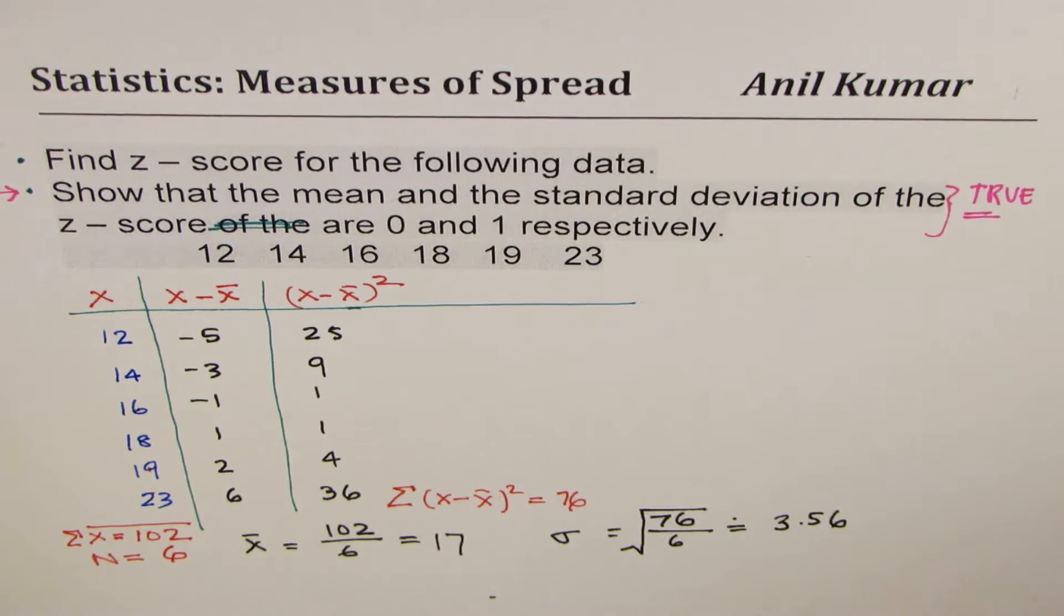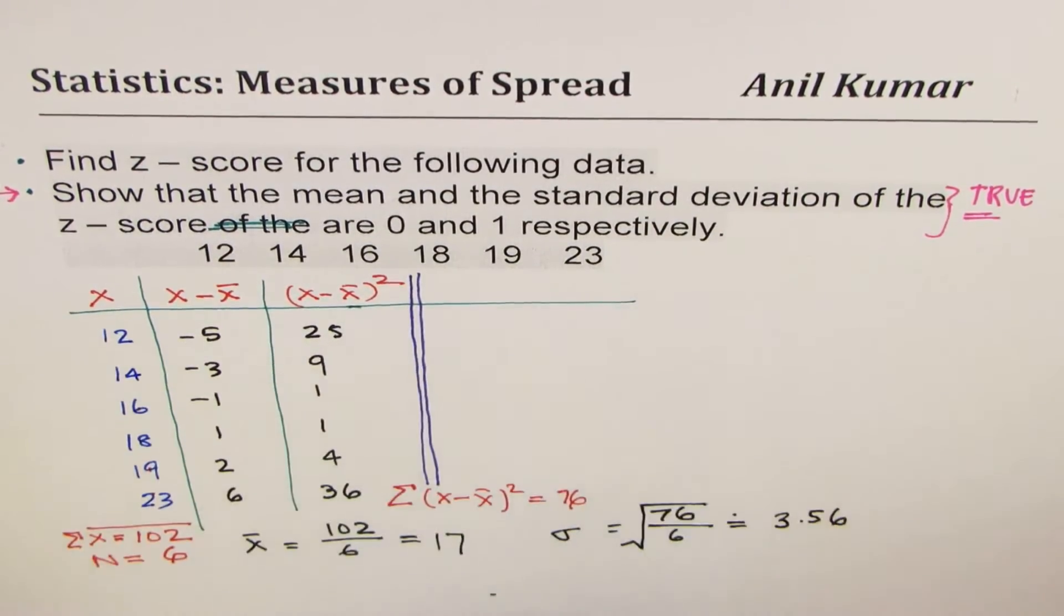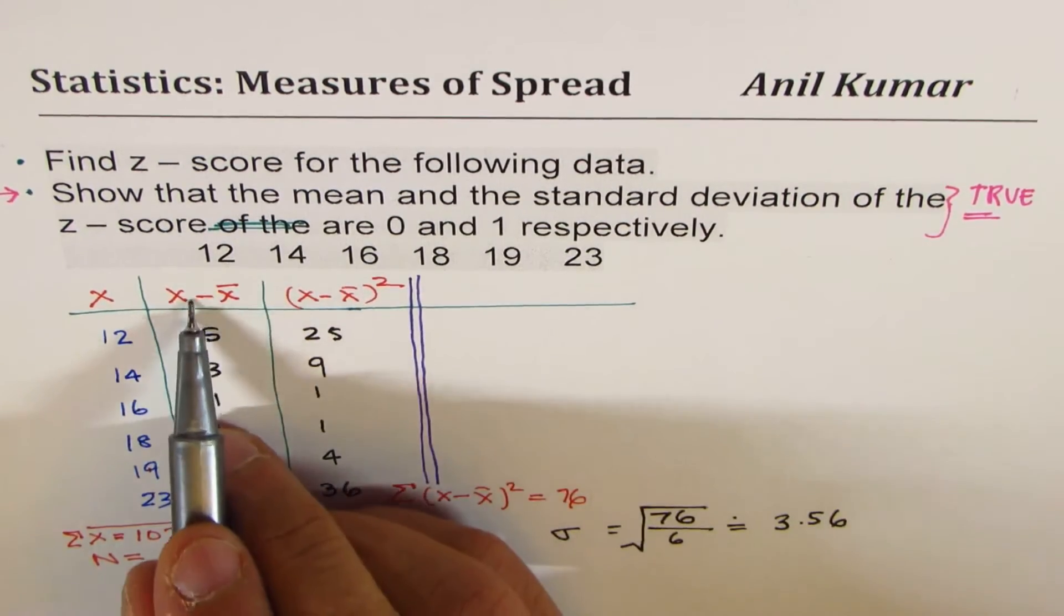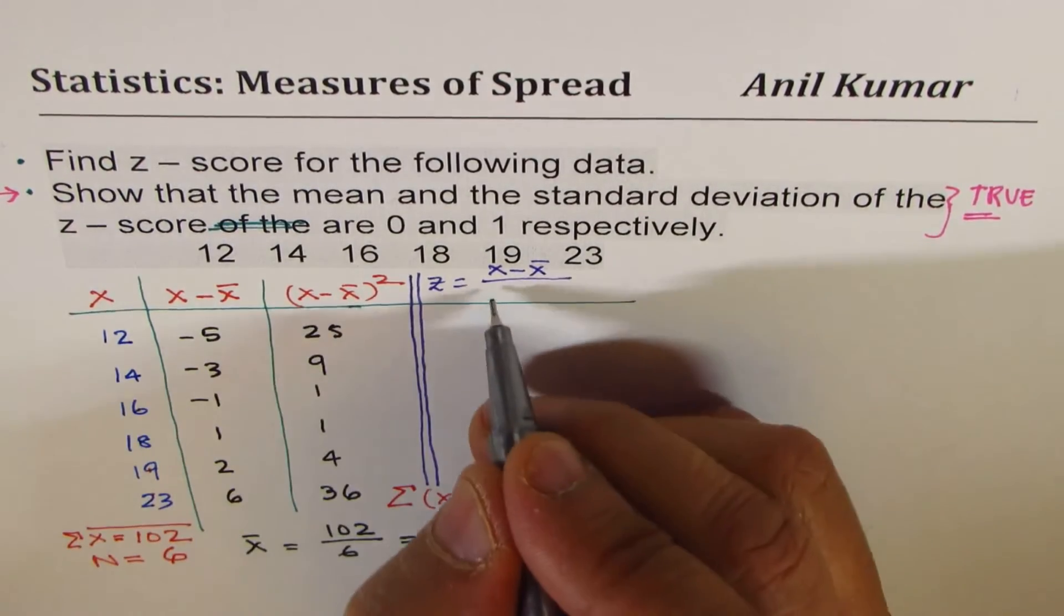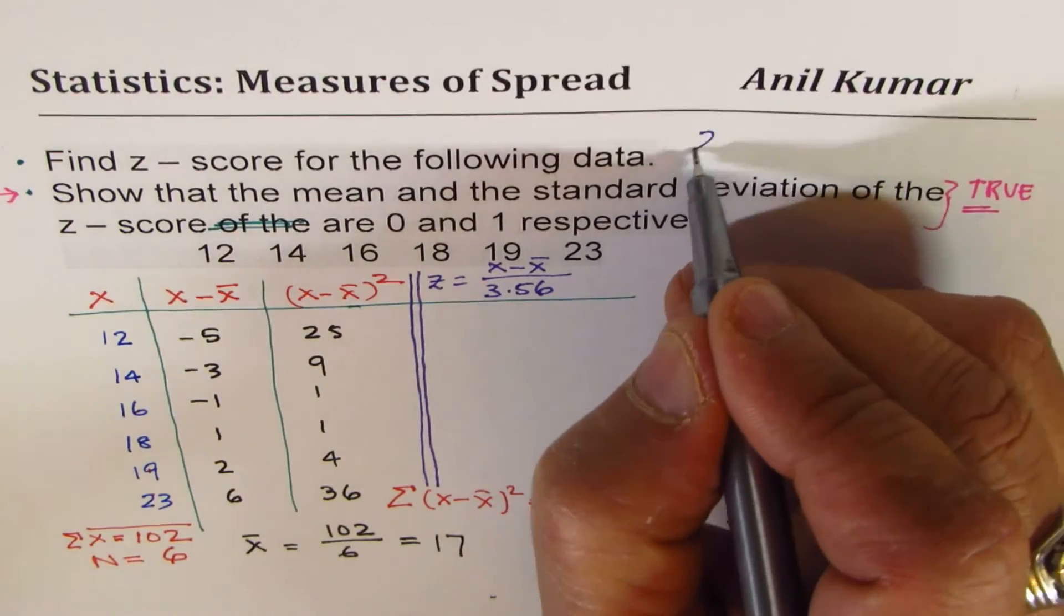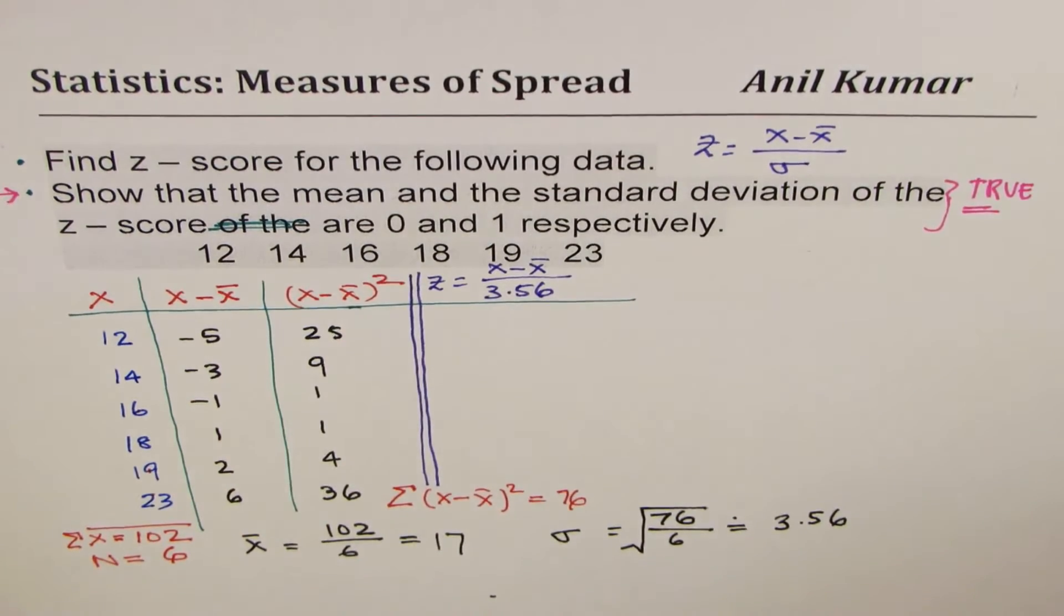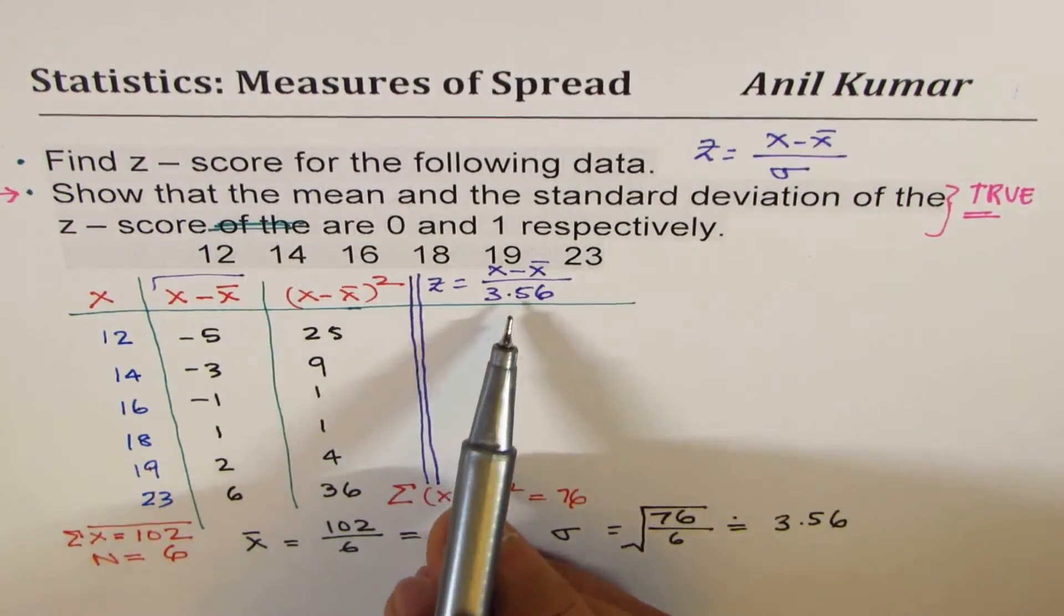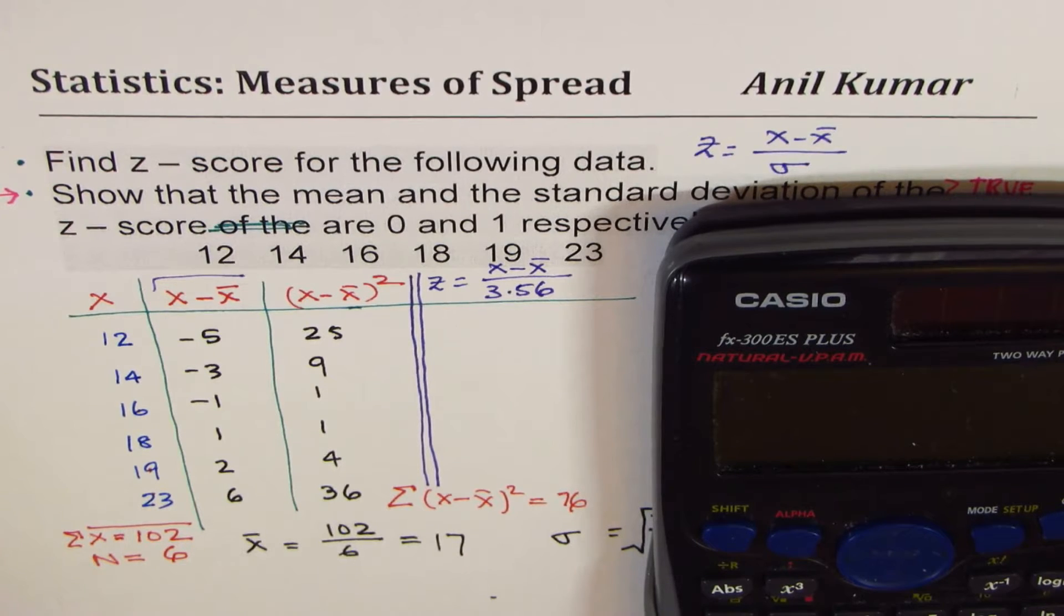So we get the sigma. Now, since we know standard deviation, we can now find the z-scores. So we'll start the second part of it, which is finding z-score. So z-score is x minus x̄ over sigma, which is 3.56. So those who are on the left side will have a negative z-score. So 5 divided by 3.56 equals in decimals.